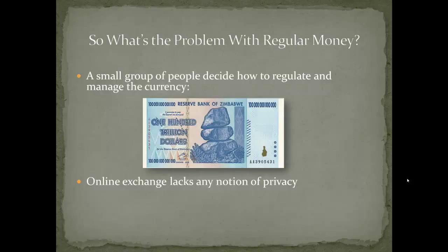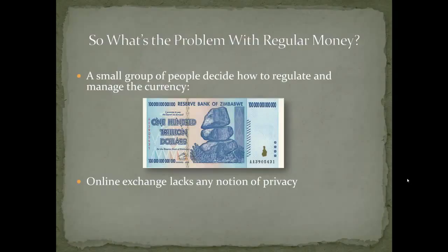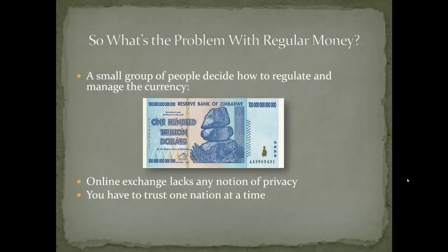Another issue is that online exchange tends to lack any notion of privacy if you need a central authority to validate and maintain the currency. You have to share what you buy with that central authority in some way so they can verify you have the money, you're not double-spending it, and it's legitimately yours — and that introduces privacy concerns. You also have to trust one nation at a time, which is very problematic. Just like the rancher who trusted Zimbabwe, he got burned terribly. If you're American you have to trust the U.S. government; if you're Chinese you trust the yuan; in the EU you trust the euro — and there are some doubts about that now.